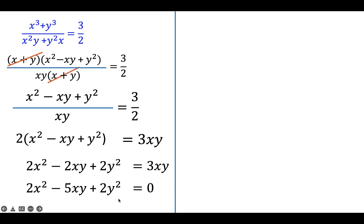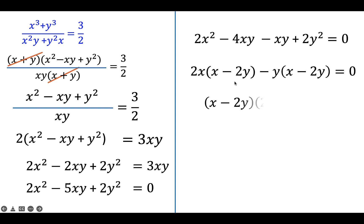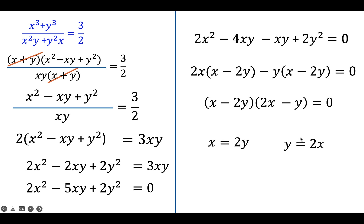Now let's factor this equation by grouping. First, split minus 5XY into minus 4XY minus XY. There is a common factor of 2X in the first two terms, and a common factor of Y in the last two. Performing factoring by grouping, there is again a common factor of (X minus 2Y), giving us the factored form. Since the product is 0, each factor equals 0, so X equals 2Y and Y equals 2X.